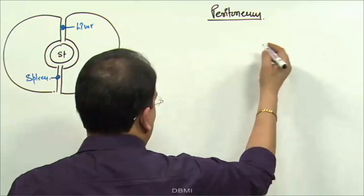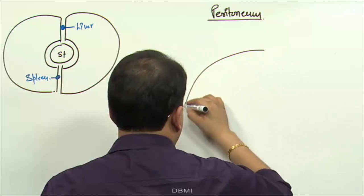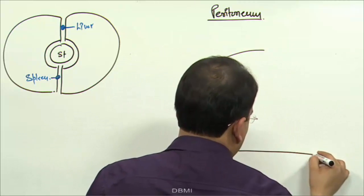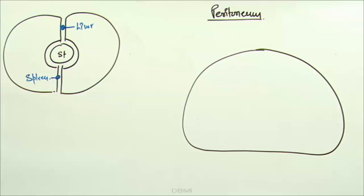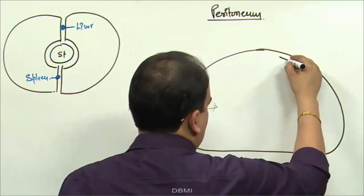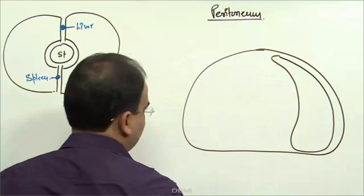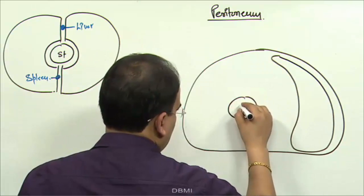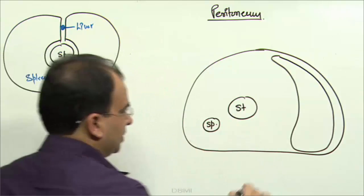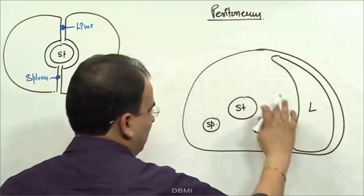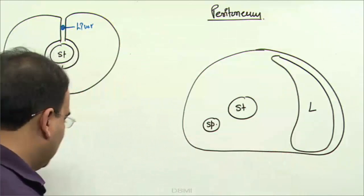If you take a transverse section of the abdominal cavity, you can see the liver has come to the right side and the spleen to the left side. Let's set aside the retroperitoneal structures for a moment and focus on the peritoneal fold arrangement.